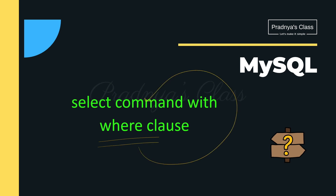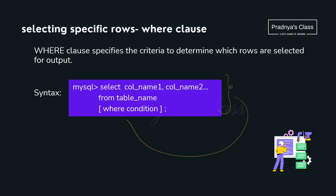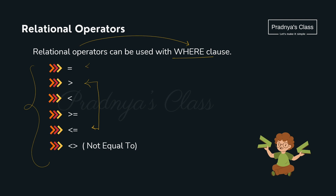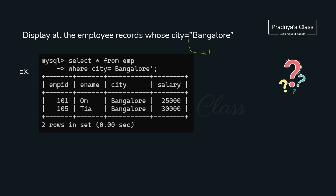Now we'll experiment with the WHERE clause used with SELECT. With WHERE, we can determine the criteria to display records. These relational operators are the same as in all programming languages — just remember equals (=) and not equal to (!=). In the first example: SELECT * FROM employee WHERE city = 'Bangalore' — records are displayed only for employees whose city is Bangalore.